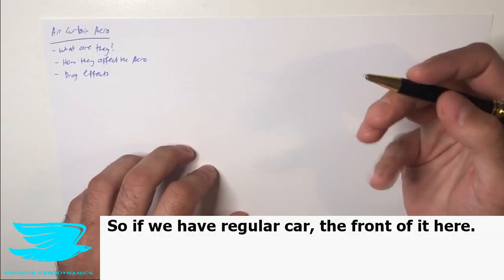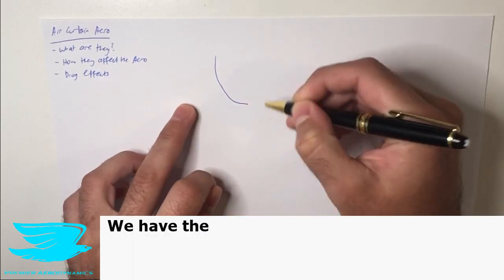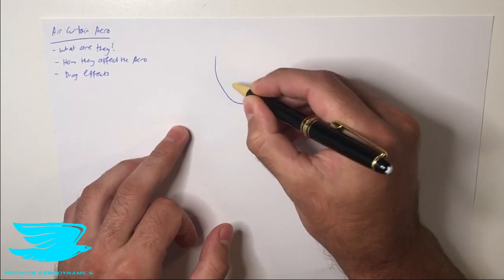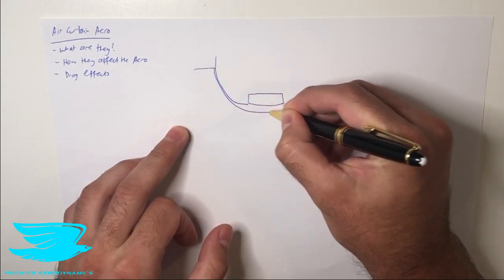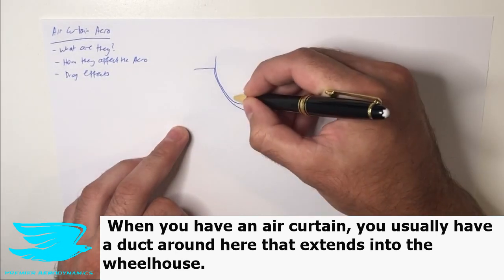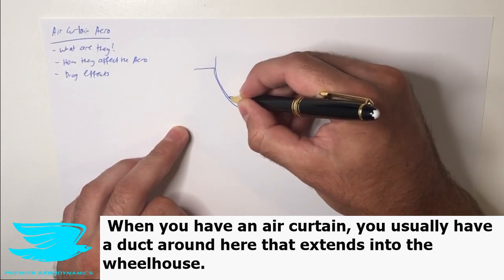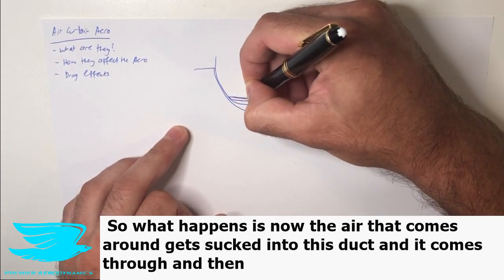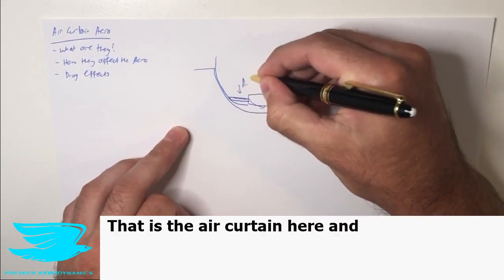So first of all, what are they? If we have a regular car at the front of it, we have the wheelhouse here and the wheel in here. For a regular car, the air will come, hit the front, and go around. When you have an air curtain, you usually have a duct around here that extends into the wheelhouse. So what happens is now the air that comes around gets sucked into this duct, and it comes through and then jettisons out. That is the air curtain.